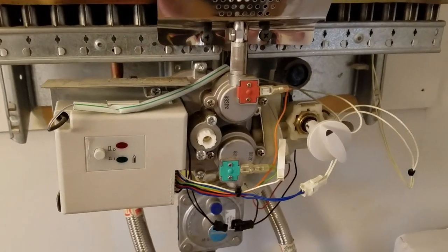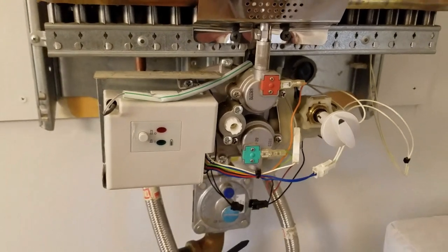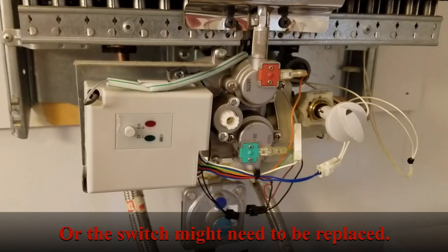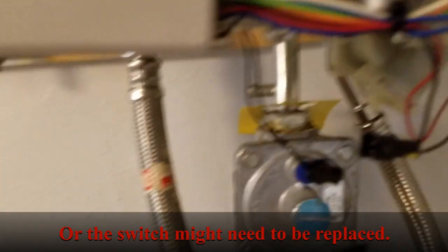That shows you if it's the micro switch or not. So if your water heater isn't working at all and you do that and it lights, then probably your switch is out of alignment. So plug this back in real quick here.